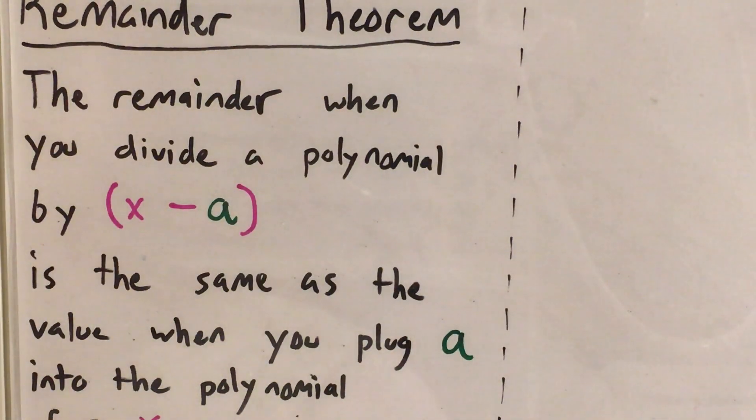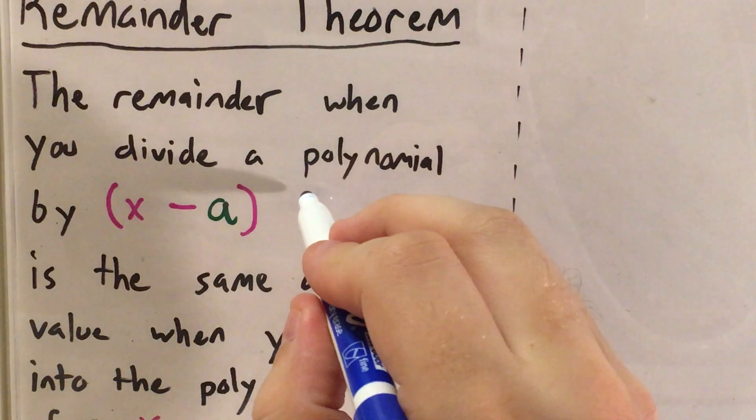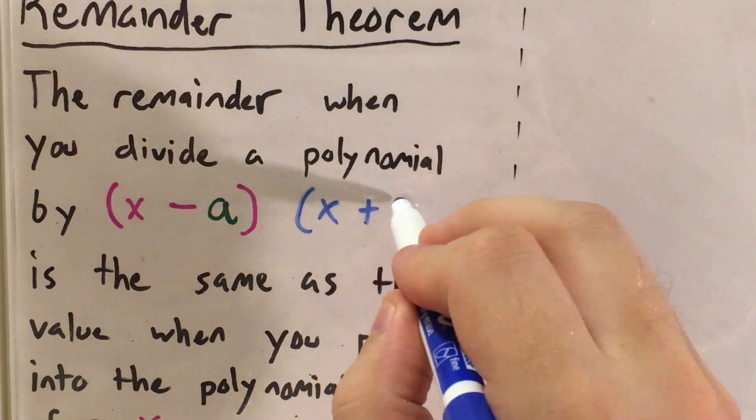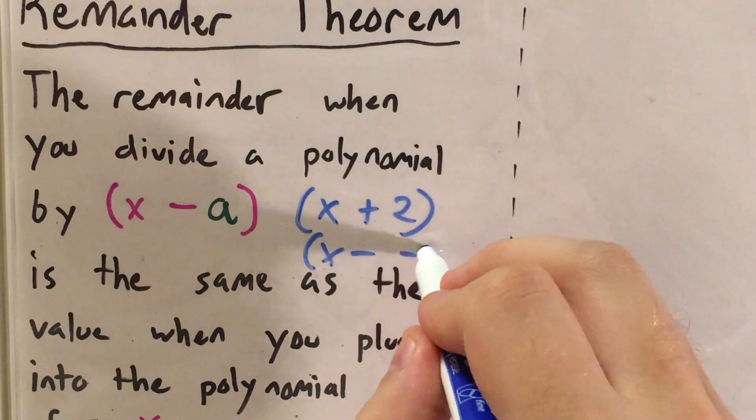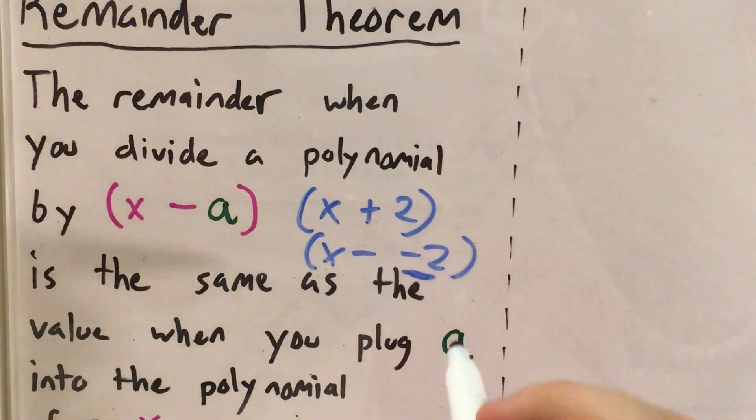If I'm looking at the linear factor x minus a, in this case x plus 2 or x minus negative 2, so negative 2 is my a.